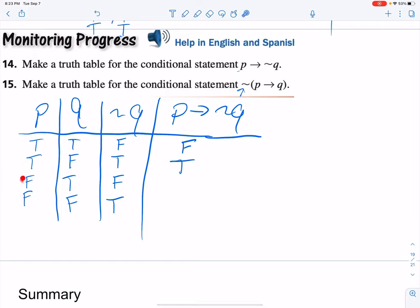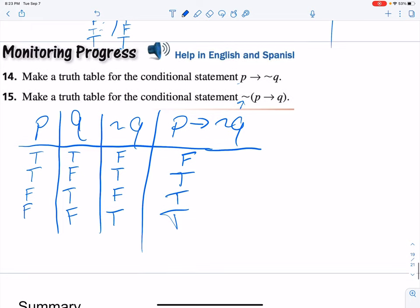Next one, we have false implies false is true. And then we have false implies true is true. So there's your truth table: false, true, true, true.